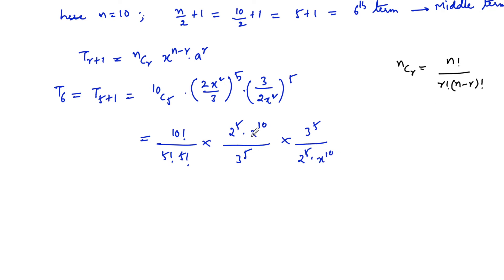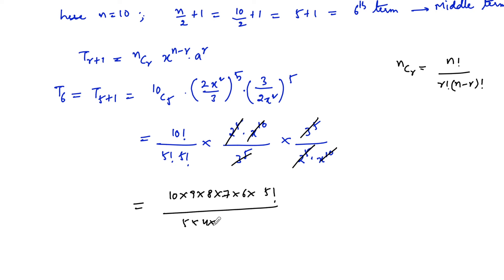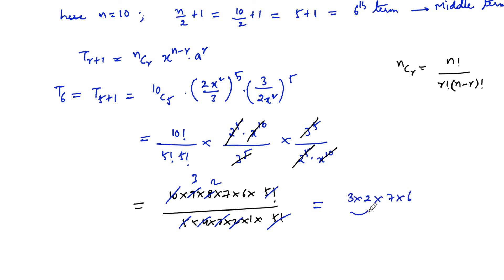We cancel the terms 2^5, 3^5, and x^10, leaving 10! / (5! · 5!). Simplifying: 10 × 9 × 8 × 7 × 6 × 5! divided by (5 × 4 × 3 × 2 × 1) × 5!. Canceling 5! gives 10 × 9 × 8 × 7 × 6 / 120, which simplifies to 3 × 2 × 7 × 6 = 252. So 252 is the middle term.